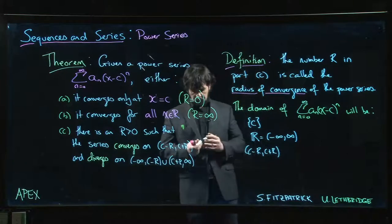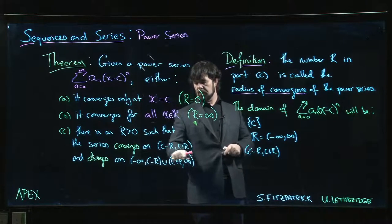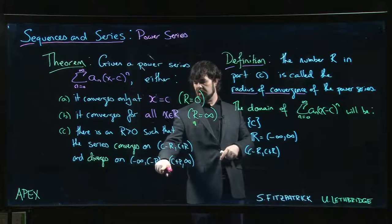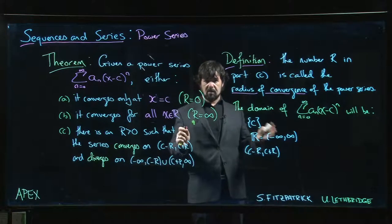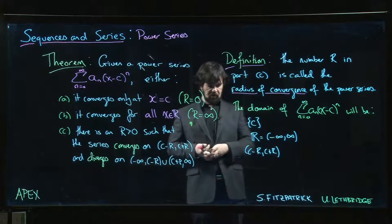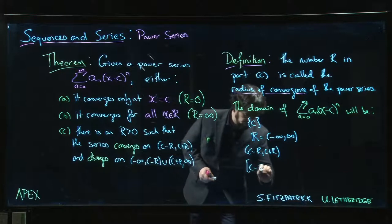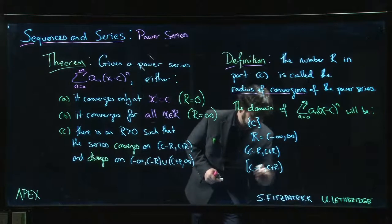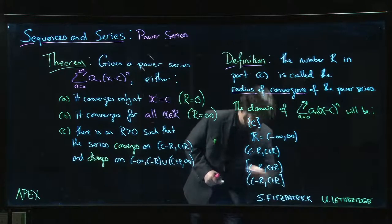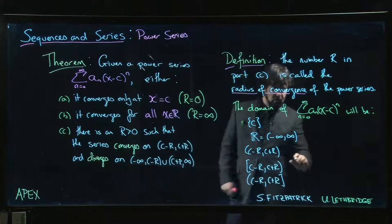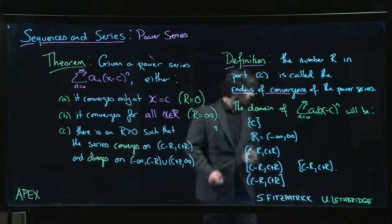One of the things the theorem doesn't address is endpoints. We know we converge inside this open interval and we diverge outside the open interval. But what about at the endpoints? Those typically have to be checked separately. Sometimes it'll happen that you get convergence at one endpoint but not the other, and sometimes you actually get convergence at both endpoints. All of these are possibilities.